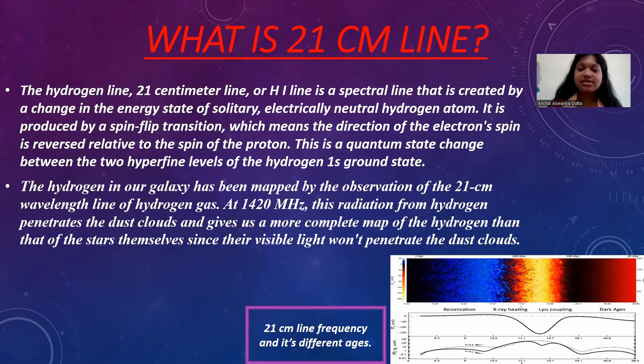Well, the hydrogen line, or 21 centimeter line, or H1 line, whatever you call it, is created by the energy of a solitary, meaning a single electrically neutral hydrogen atom. In this transition, the electron within a hydrogen atom flips its spin orientation while transitioning from a higher energy state to a lower energy state.